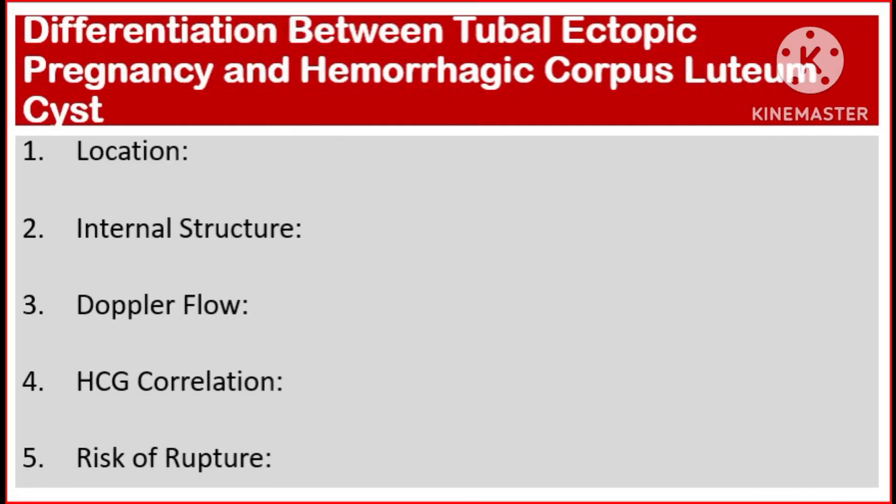Differentiation between tubal ectopic pregnancy and hemorrhagic corpus luteum cysts according to: Number one, location. Number two, internal structure. Number three, Doppler flow. Number four, human chorionic gonadotropin correlation. Number five, risk of rupture.